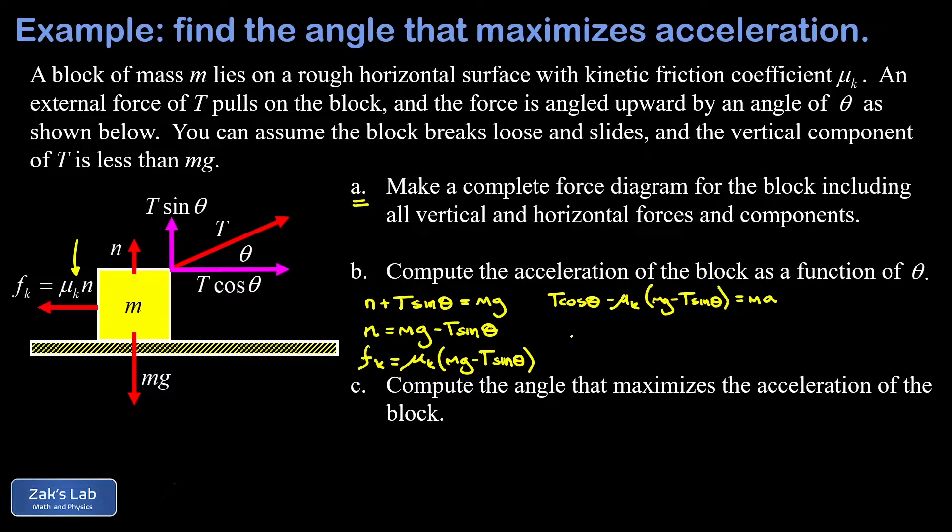Solving for a, we're going to divide both sides by m. At the same time I'm going to clean things up a little by distributing this mu_k to both terms, which makes the second term positive. I end up with a equals (T cos theta plus mu_k T sin theta minus mu_k mg) all divided by m.